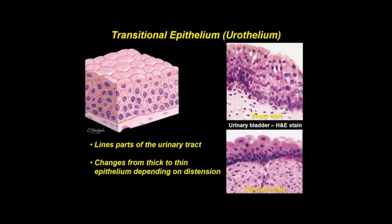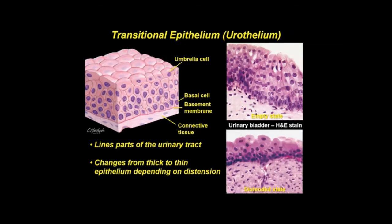Transitional epithelium is more aptly termed urothelium because it is restricted to lower parts of the urinary tract. The basal layer of cuboidal to columnar cells contacts the basement membrane, and the most superficial layer consists of relatively large umbrella cells. Urothelium rapidly adapts to contraction and distension, changing from a tall epithelium with five to seven cell layers in the bladder's empty state to a thinner epithelium with only two or three cell layers in the distended state.